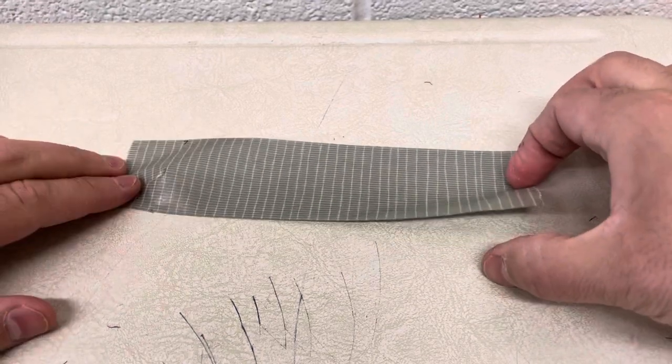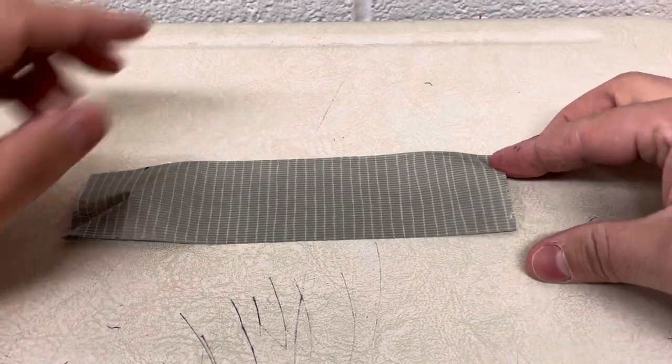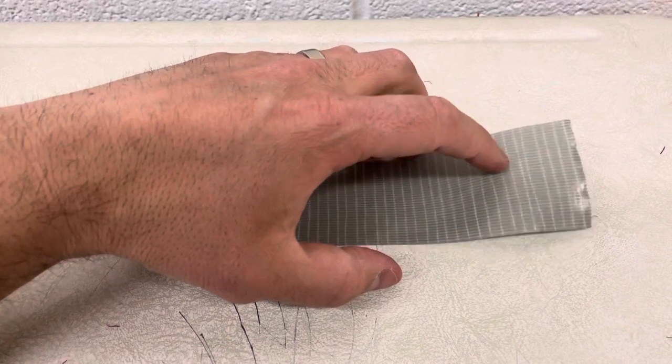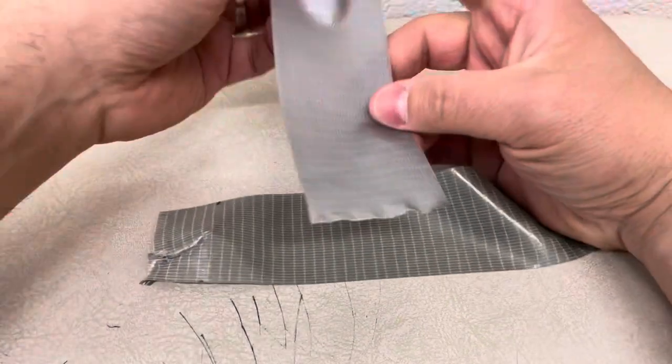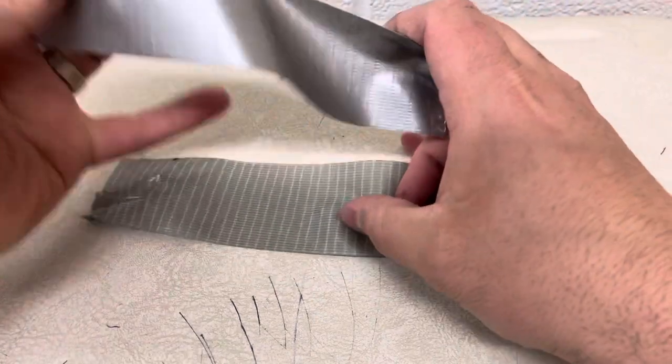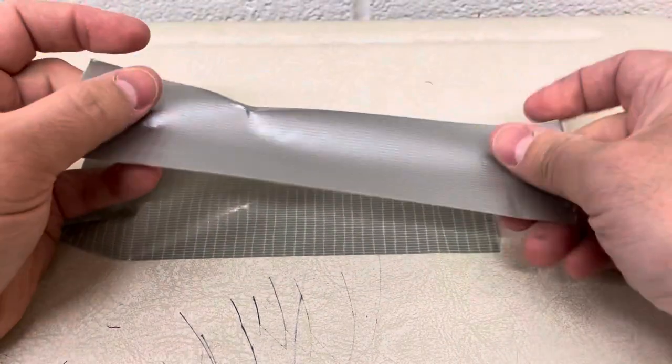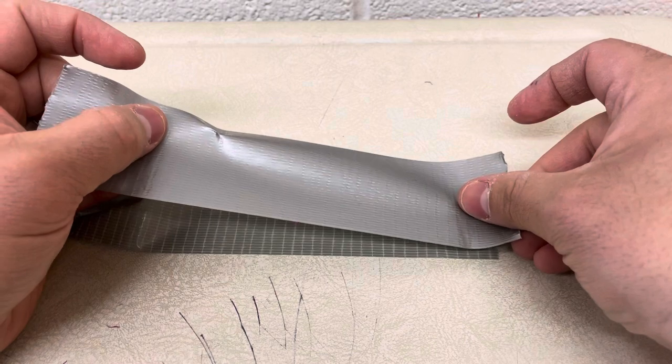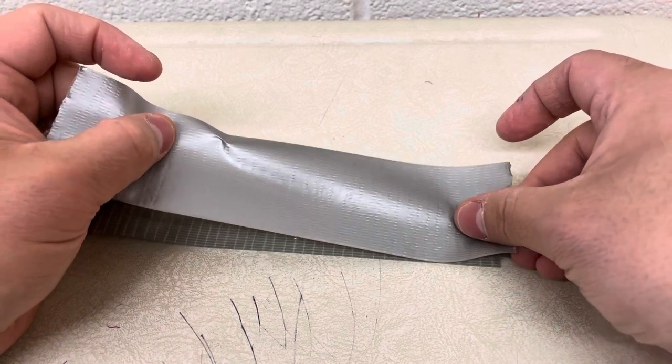Then you want to get an equivalent piece that is about the same length. And you want to essentially put it on top of this, sticking them to each other. You want to have some of it offset so that you can have a little bit of a sticky part at the end.